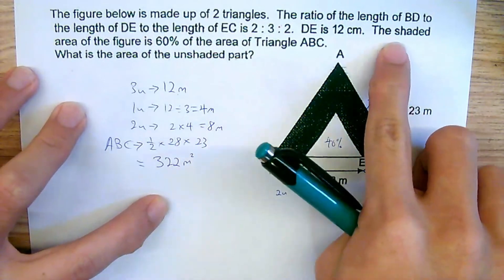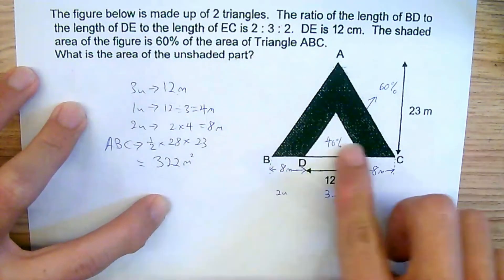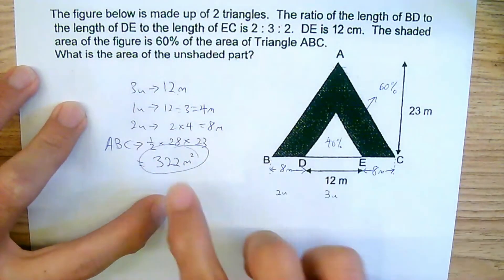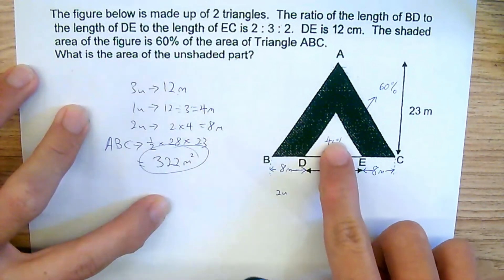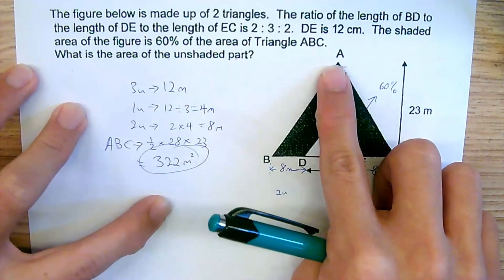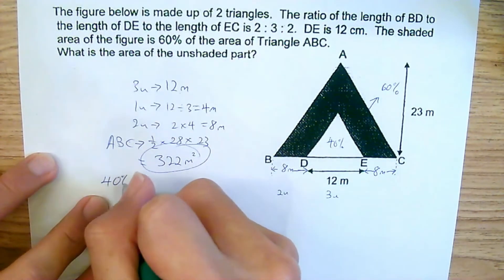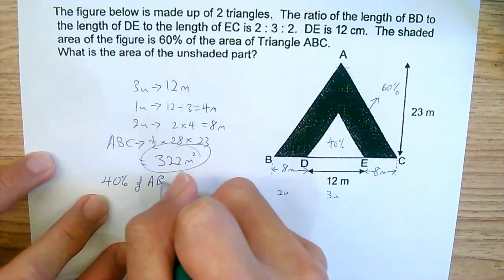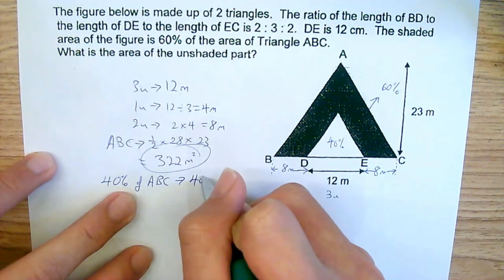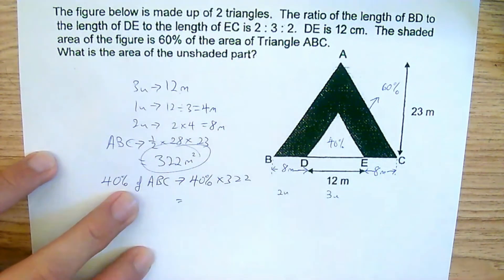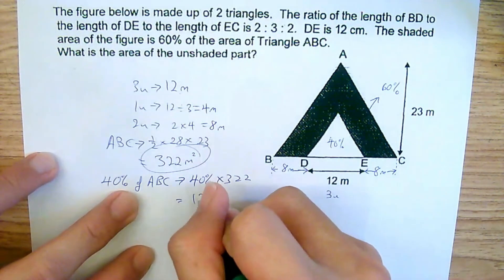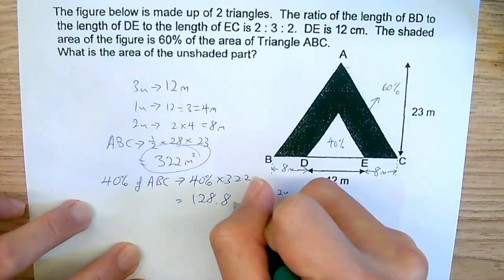Now since they said that the shaded area is 60% of the entire thing, which is this, the unshaded part must be 40% of the entire thing. So we only have one more working to do, which is to find 40% of ABC. This will be quite simple, just take 40% multiplied by 322, just throw that inside your calculator and then you'll be getting 128.8 meters squared.